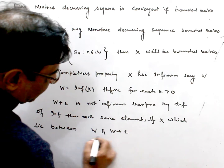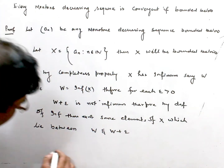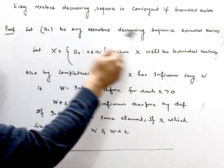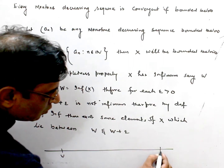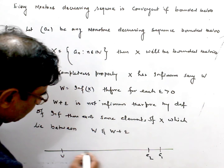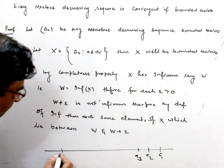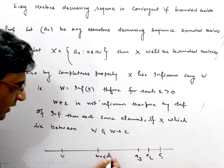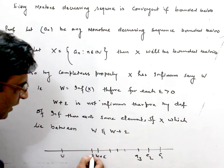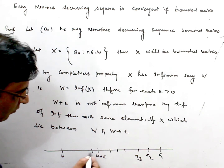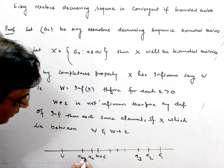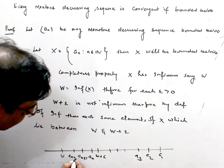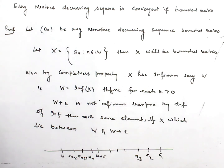So geometrically, how I can express this: if this is w, one thing — because the sequence is decreasing so it will move from right to left — so a1, a2, sequence will move this side, and w is here so w plus epsilon will be on the right side. Now the sequence keeps decreasing and I say a_m for here, a_m plus 1 for here.